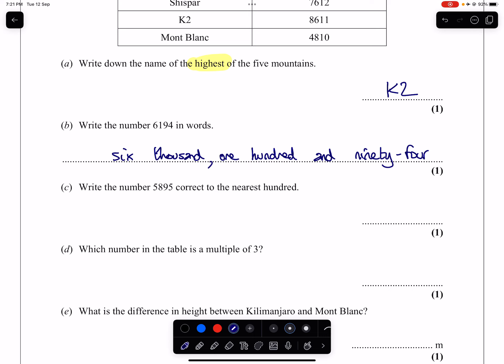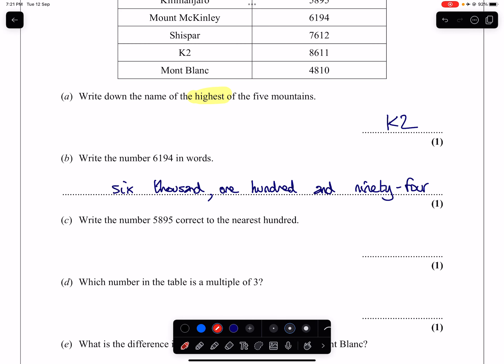Part C. Write the number 5,895 correct to the nearest hundred. So the hundreds column is the eight, which means here is where the rounding is going to happen. That nine is going to make that eight turn into a nine, so I will end up with 5,900, and it will be two zeros here, so 5,900.